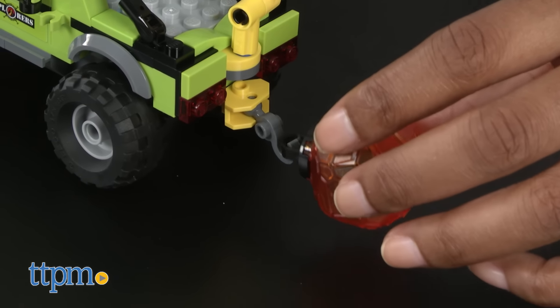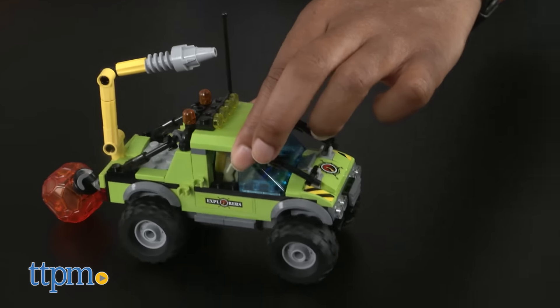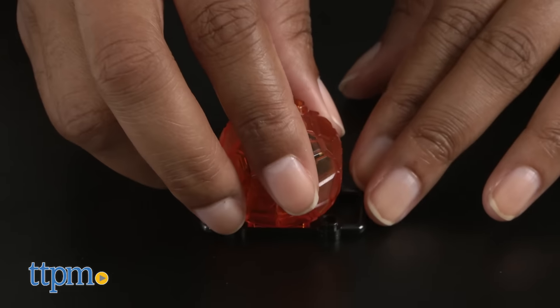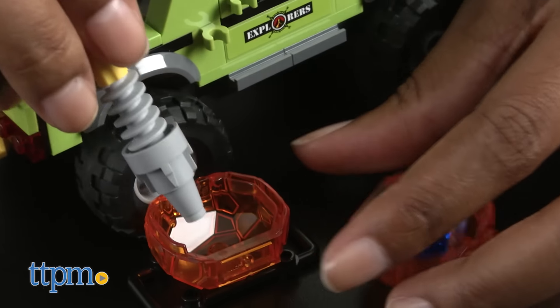Head on over to the volcano site, load the boulder on the back of the truck, and drive it to the lab. Unload the boulder and use a drill to crack it open and reveal the majestic blue crystal element inside.